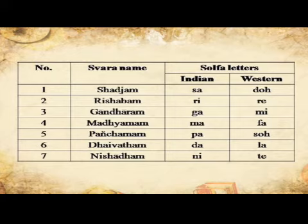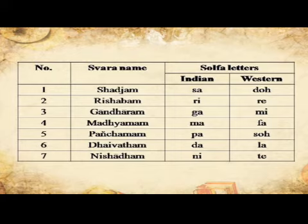1. Shajjam — Indian: Sa, Western: Do. 2. Rishabham — Indian: Ri, Western: Re. 3. Gandharam — Indian: Ga, Western: Mi. 4. Madhyamam — Indian: Ma, Western: Fa. 5. Panchamam — Indian: Pa, Western: So. 6. Daivatam — Indian: Da, Western: La. 7. Nishadam — Indian: Ni, Western: Te.